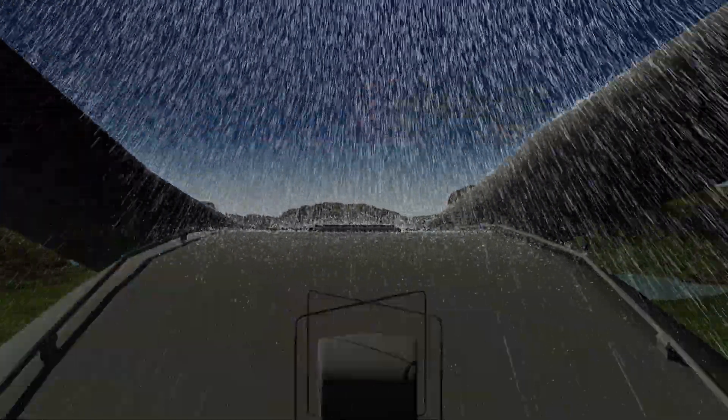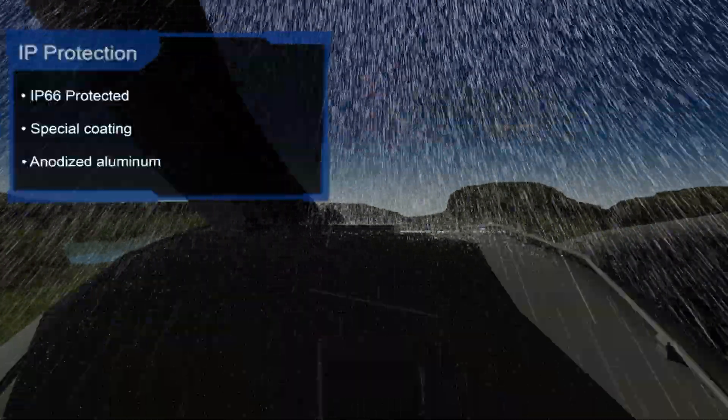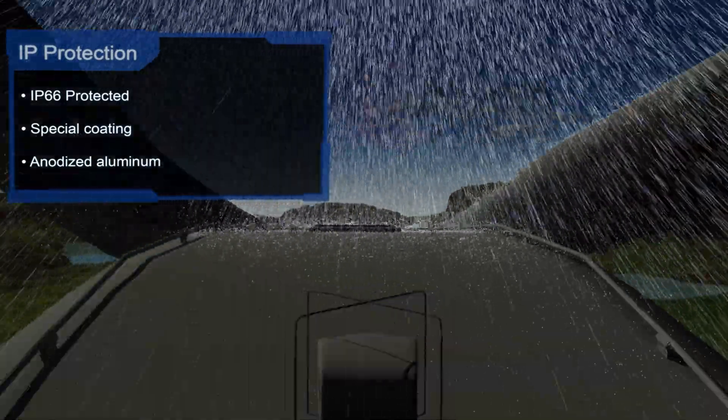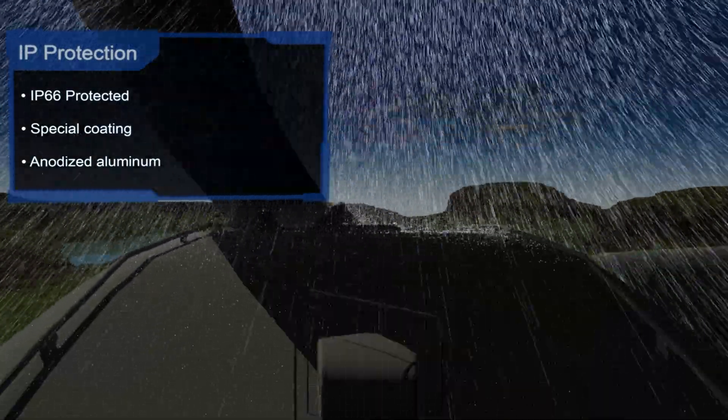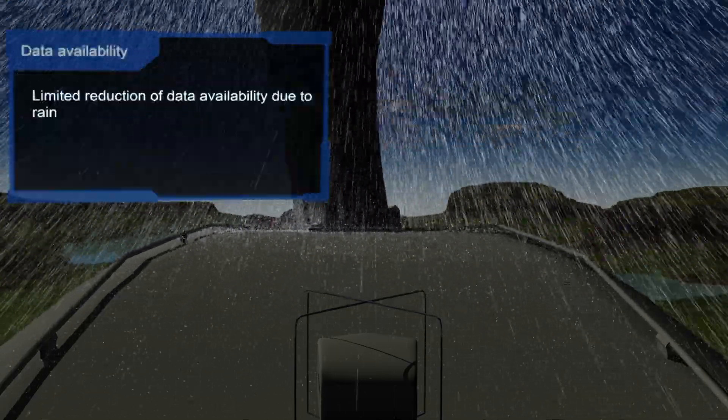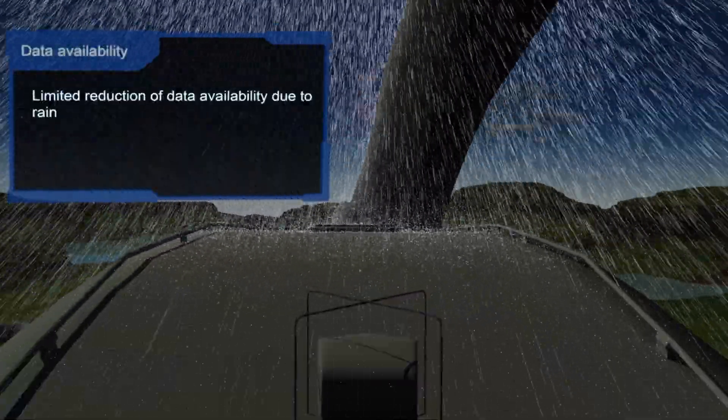The lidar is IP66 protected, and the special coating in anodized aluminum construction will let it survive all possible weather conditions. The system keeps a high degree of data availability in any climate, even during heavy rainfall.